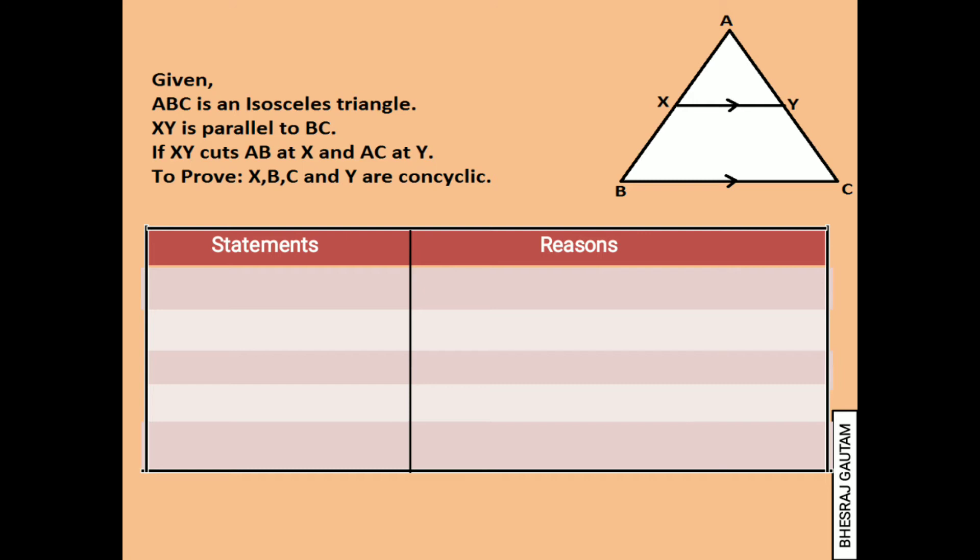Now, observing the figure carefully, the first case we can write is angle ABC is equal to angle ACB. Do you wonder why? Yes, it's because these two angles are base angles of an isosceles triangle, which are always equal.